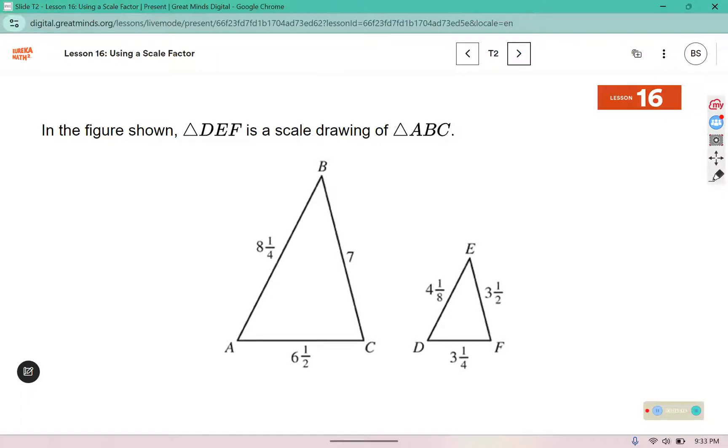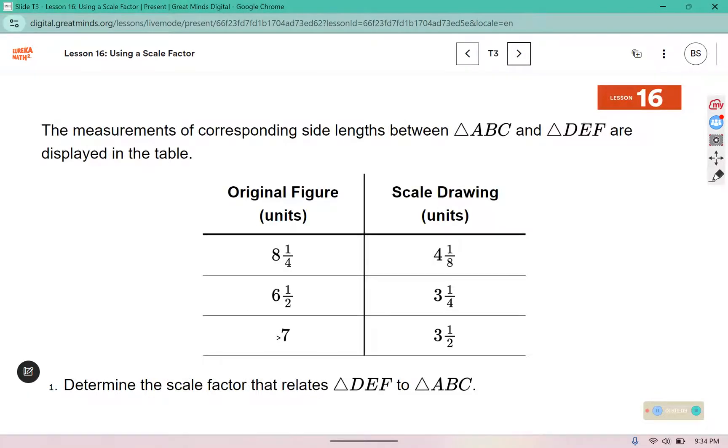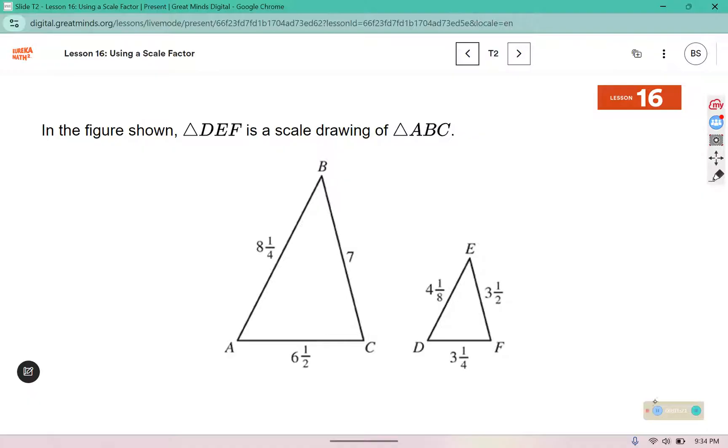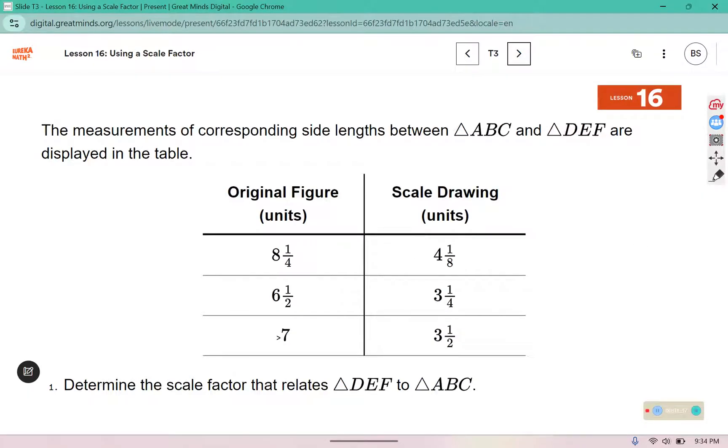In the figure shown, triangle DEF is a scale drawing of triangle ABC. Our job is to figure out the scale factor. Remember the scale factor is essentially the constant of proportionality for drawings. So I'm going to compare what's called a corresponding side. Four and an eighth corresponds with eight and a fourth, three and a half corresponds with seven, six and a half corresponds with three and one fourth. They're grouped together like you see here.